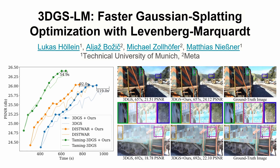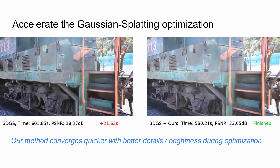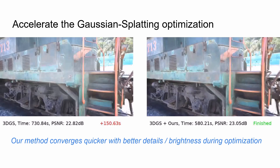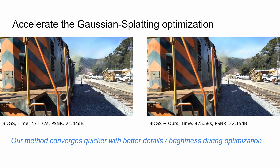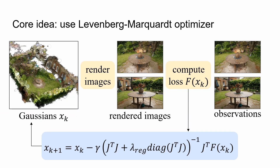We present 3DGS-LM: Faster Gaussian Splatting Optimization with Levenberg-Marquardt. Our method accelerates the optimization time of Gaussian Splatting. Our key contribution is to leverage Levenberg-Marquardt to solve for the 3D Gaussian scene representation, replacing the commonly used, less efficient Adam Optimizer.